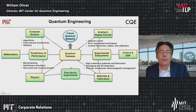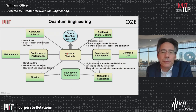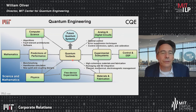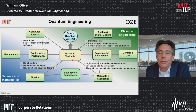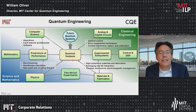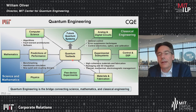Let me conclude by saying what I think quantum engineering is — it's truly an institute-wide effort. If we want to build future quantum systems, we first need to build test beds. To do that, we need to bridge the science and mathematics side of MIT — physics, math, computer science — with classical engineering such as analog and digital circuits, control, DSP, materials and fab. Both of these sides need to pivot to quantum. I view quantum engineering as the bridge connecting science, math, and classical engineering.